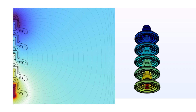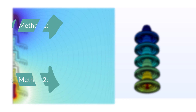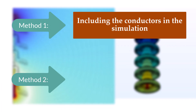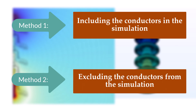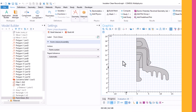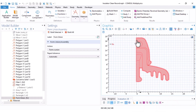I explain this simulation in two different methods. In the first method, the metal parts — the conductors — are included in the simulation. In the second method, I exclude the conductors because we already know that the electric field inside conductors at low frequencies is zero, so we do not need to simulate them. We have built such a geometry in a previous video; please refer to that video if needed.